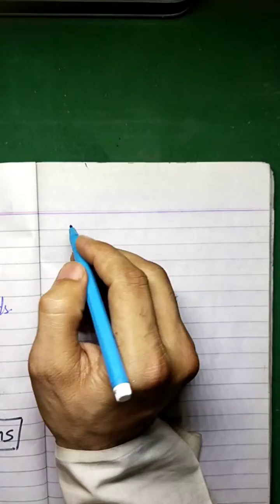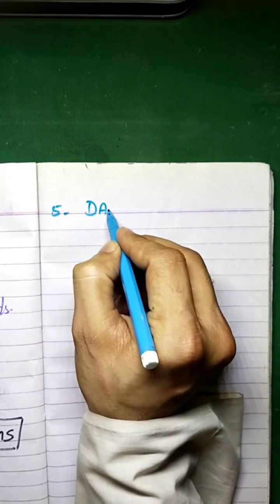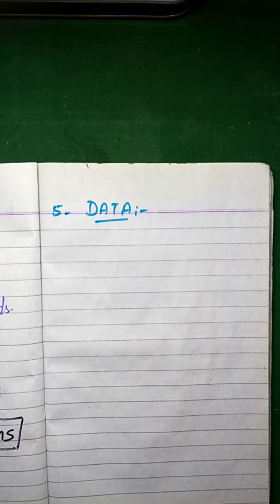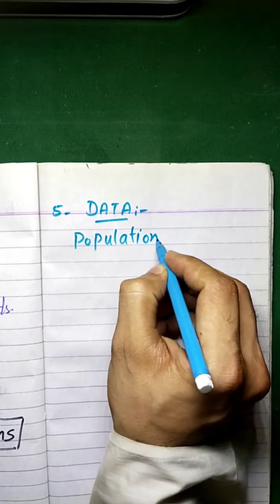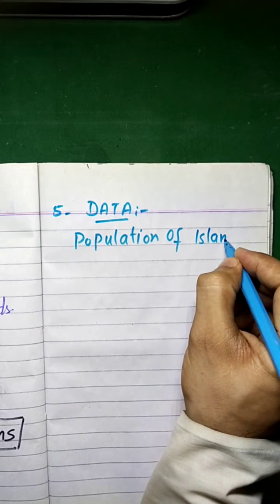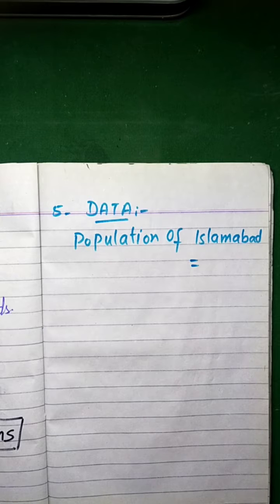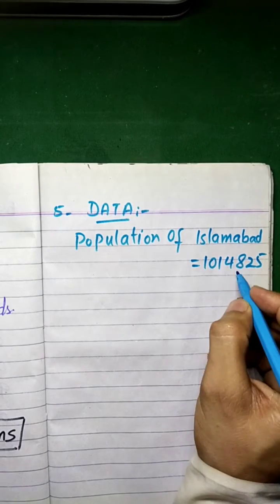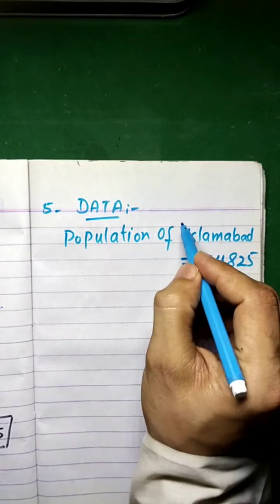Question number five. We are going to write the data. The population of Islamabad is 1,014,825 — this is the population of Islamabad in 2017.